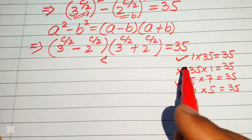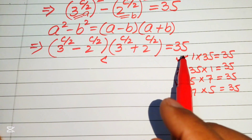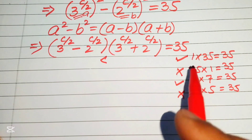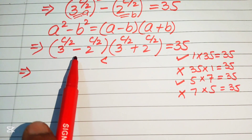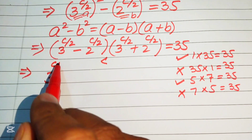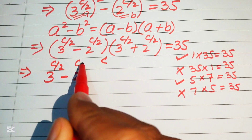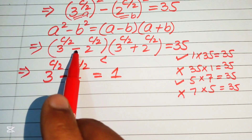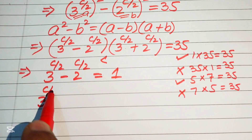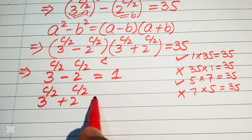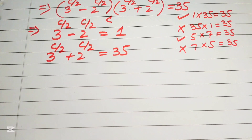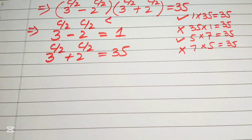We have two valid possibilities. Choosing the 1×35 case: 3^(c/2) minus 2^(c/2) equals 1, and 3^(c/2) plus 2^(c/2) equals 35. We now have these two equations from which we can find the value of c.